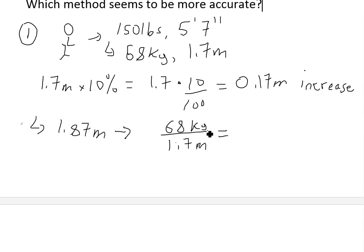If the proportion stays the same, then we have to find the mass, and that's just going to be 10% higher. So here's this 1.87 meters.